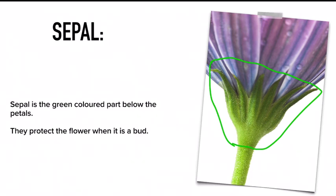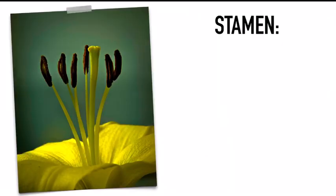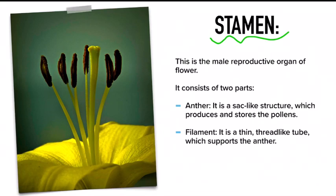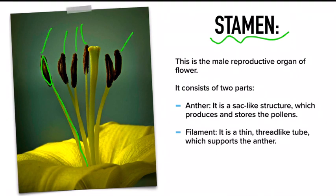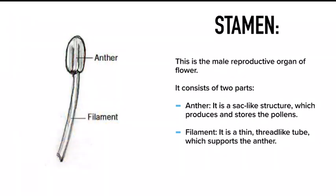The third part is the stamen, which is the male reproductive organ of a flower. Flowers have both male and female parts, and the stamen is the male reproductive part. In this diagram, you can see the black bag-like structure with a stick — those are the stamens. Please remember, the central structure is not the stamen.